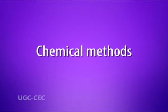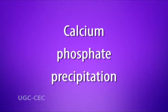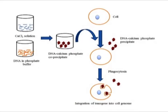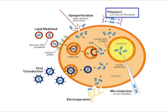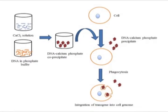Next are chemical methods. First is calcium phosphate precipitation. This approach can be applied to virtually all mammalian cells, but many cell lines do not take up the calcium phosphate precipitate easily. The DNA preparation is first dissolved in phosphate buffer and then calcium chloride solution is added. This leads to the formation of a calcium phosphate-DNA precipitate, which is then added to the cells to be transfected. The precipitate particles are taken in by the cells by phagocytosis. In a small proportion of transfected cells, the DNA becomes integrated into the cell's genome, producing stable or permanent transfection.